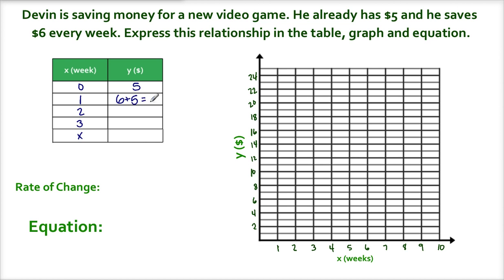So he has $11 after one week. Okay, how much money does he have saved after two weeks? Well, it's two weeks have passed, so 6 times 2, plus the $5 he already had. So 6 times 2 is 12, plus 5 gives me 17.